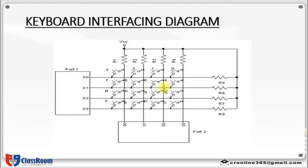The microcontroller detects that a key has been pressed, then waits for a 20-millisecond delay. Why this 20-millisecond delay? First, to confirm the key press was not an erroneous one — that is, not due to noise. Also, it prevents the same key press from being interpreted as multiple key presses. If after this 20-millisecond delay the key is still pressed, it proceeds to the next stage.